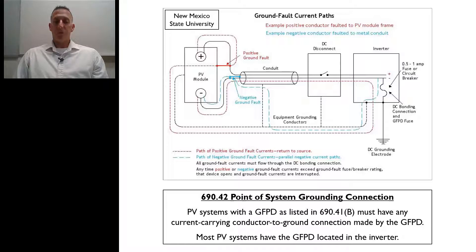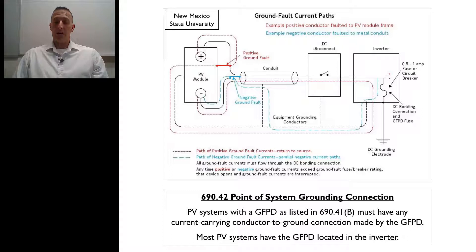In 690-42 of the 2017 National Electrical Code, it talks about the point of system grounding connection for solar PV systems. It states that PV systems with a ground fault protective device as listed in 690-41B must have any current carrying conductor to ground connection made by the ground fault protective device. So wherever you're connecting those current carrying conductors to ground, if you have a grounded system, that connection has to be made at the ground fault protective device.